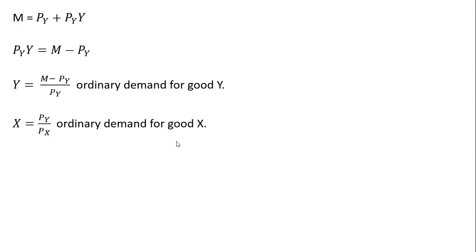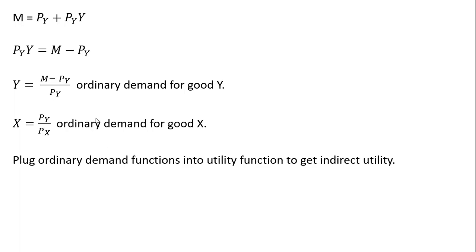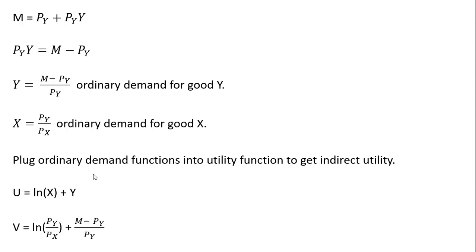Rewriting our ordinary demand for good x, which we just found, and plugging both of these results into the utility function — for x I'm going to plug in the price of good y divided by the price of good x, and for y I'm going to plug in the ordinary demand for good y. Doing that and then changing u to v, we will call that our indirect utility function.